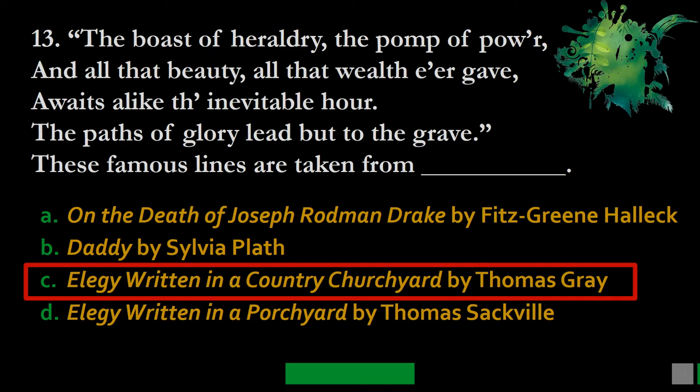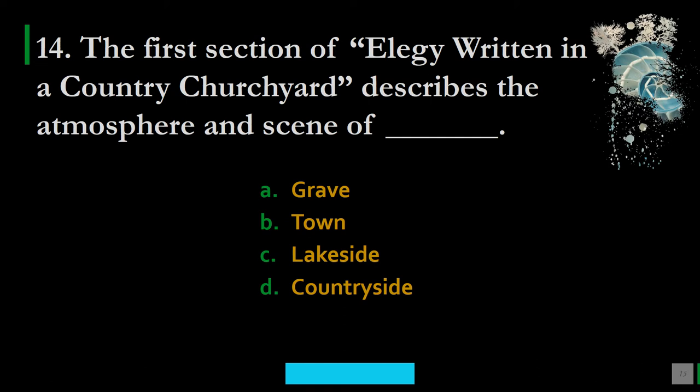Question 14: The first section of Elegy Written in a Country Churchyard describes the atmosphere and scene of — A. Grave, B. Town, C. Lakeside, D. Countryside. The correct option is D — countryside. We find the description of countryside in this elegy.